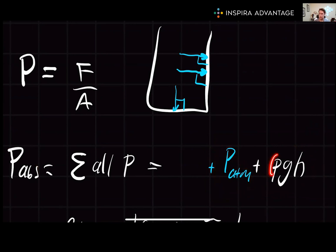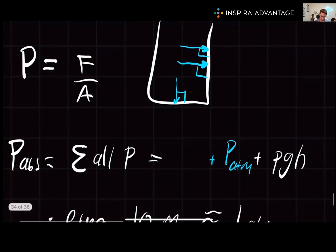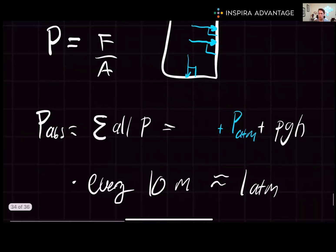Rho is the density of the fluid, g is the acceleration due to gravity, so 10 on the MCAT, and h is the depth of fluid in the water, sometimes given as z. An interesting thing to note here for quick calculations is every additional 10 meters of depth in water is equivalent to roughly one more atmosphere of absolute pressure.